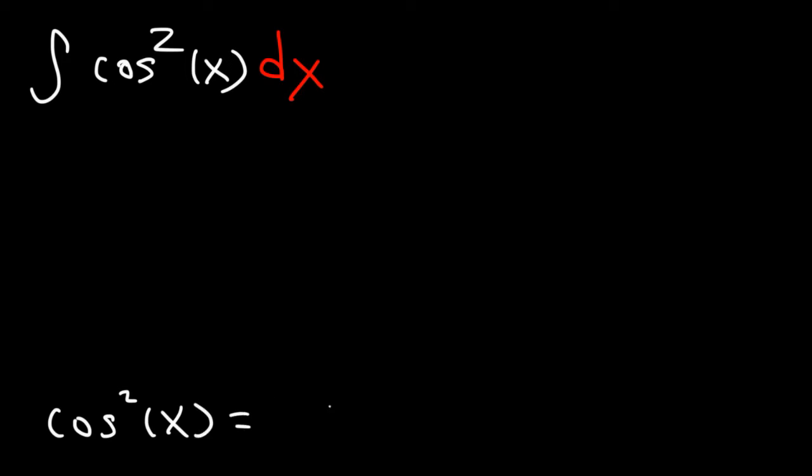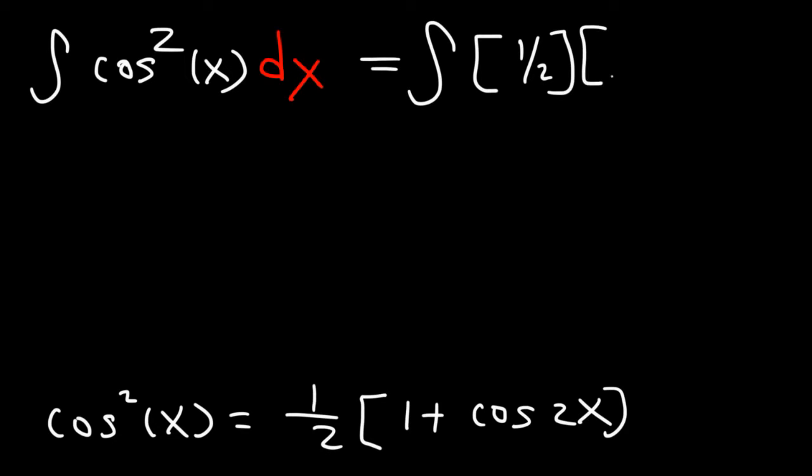1 over 2 times 1 plus cosine 2x. So this means we have the integral of 1 half times 1 plus cosine 2x. I'm gonna move the constant to the front.